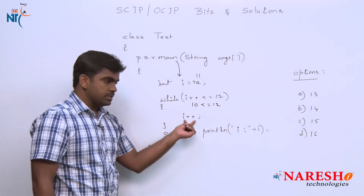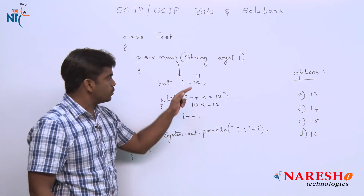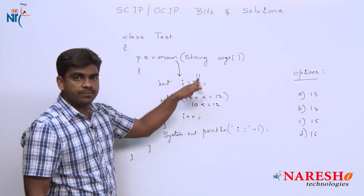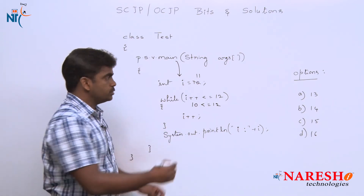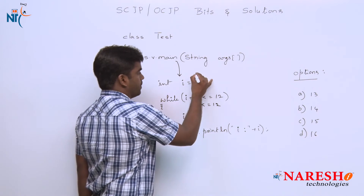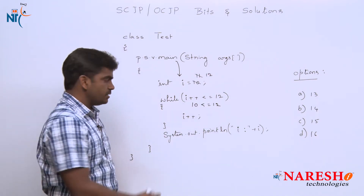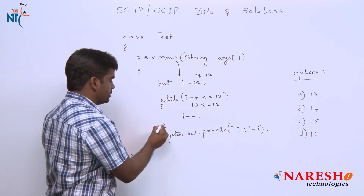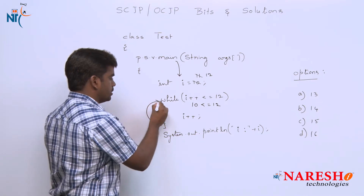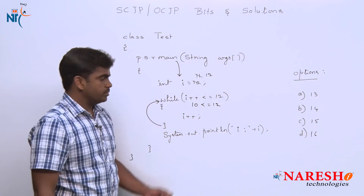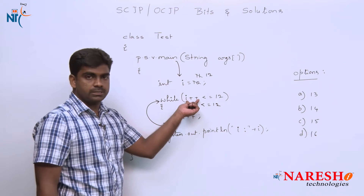Yes, I plus plus executes and the I value increases. So the I value becomes 11, then 11 becomes 12. The loop repeats again.